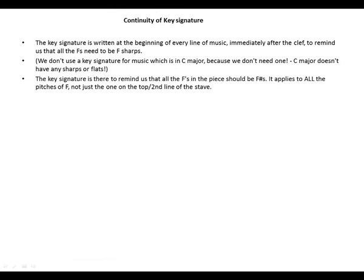The key signature is written at the beginning of every line of music, immediately after the clef, to remind us that all the F's need to be F sharp. We don't use a key signature for music in C major because C major doesn't have any sharps or flats. The key signature applies to all the pitches of F, not just the one on the top line of the stave.